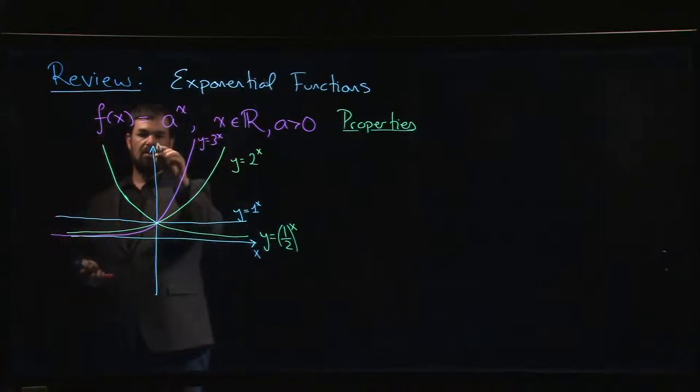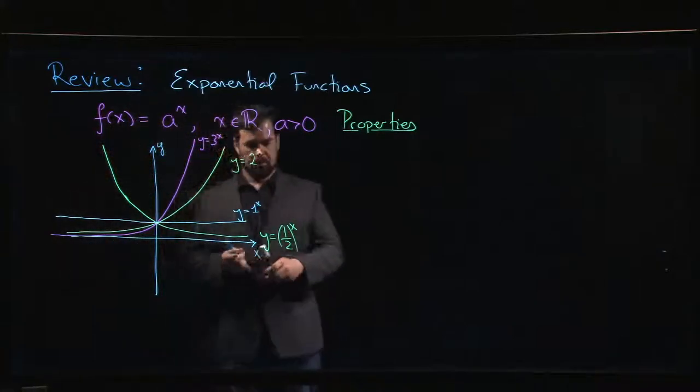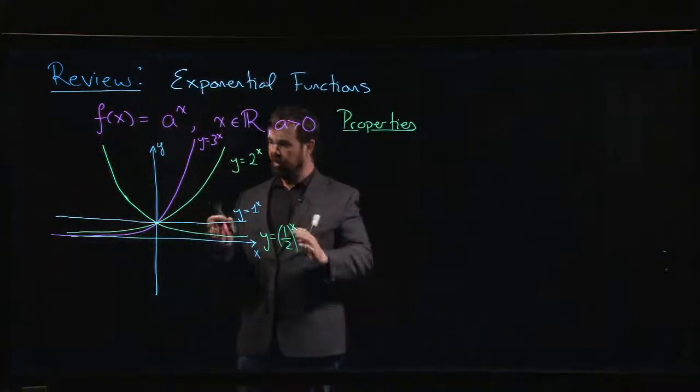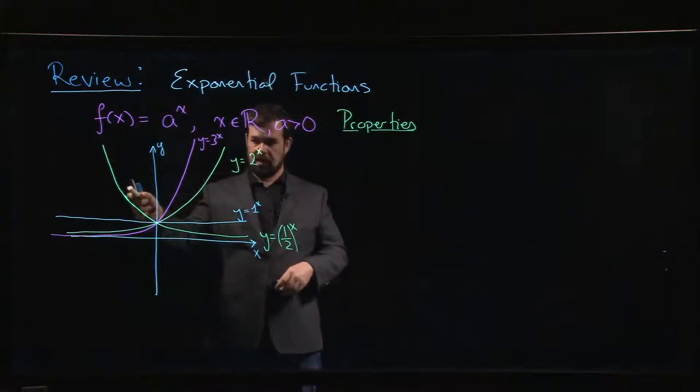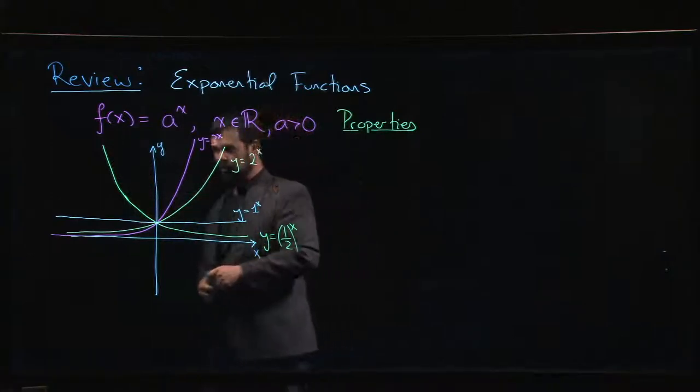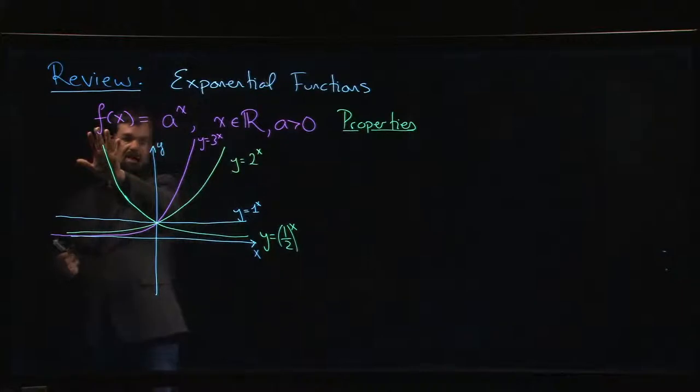If a is between 0 and 1, then you get this decreasing function rather than an increasing function. It's big for negative values of x and then it shrinks down towards 0.